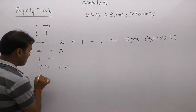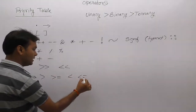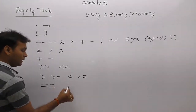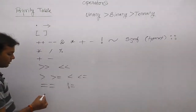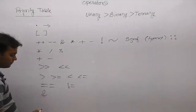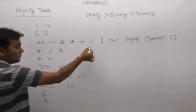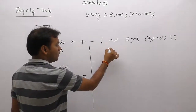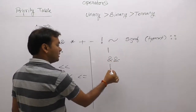After that, next highest priority is taken by relational operators: greater than, greater than or equal, less than, less than or equal. Next is equal equal (==) and not equal (!=) with the same priority. Then the remaining bitwise operators: bitwise AND, bitwise XOR, then bitwise OR. After that, logical AND and logical OR.